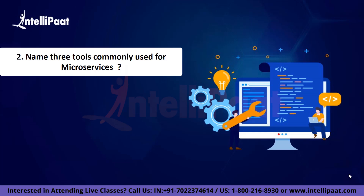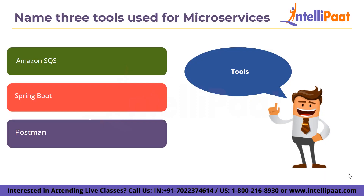Question two: name three tools commonly used for microservices. The three tools commonly used for microservices are: first, Amazon SQS, which means Simple Queue Service offered by Amazon; second, the Java framework called Spring Boot; and third, Postman.